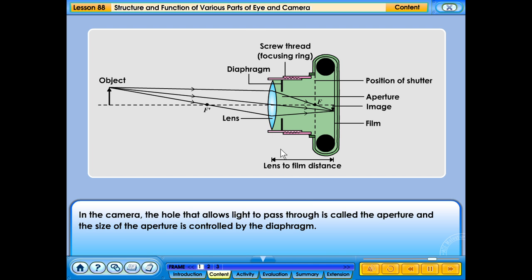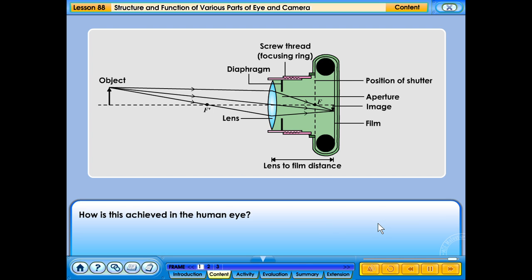In the camera, the hole that allows light to pass through is called the aperture and the size of the aperture is controlled by the diaphragm. How is this achieved in the human eye?